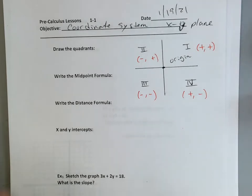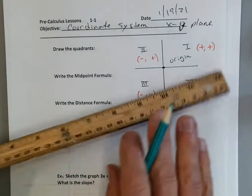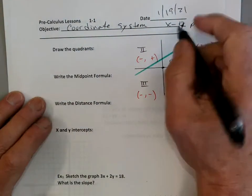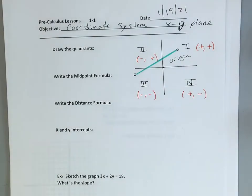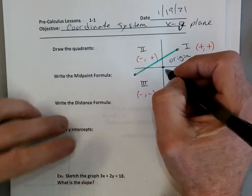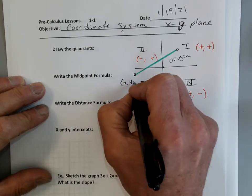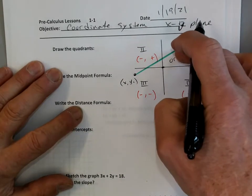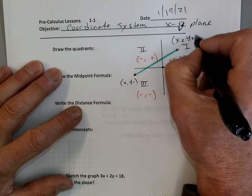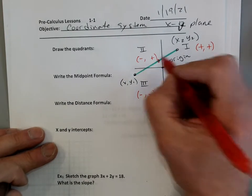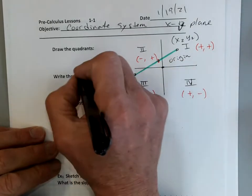Now, the midpoint formula. Let me go ahead and just draw any line segment and put it down in my graph. A formula has to work for every line — not just one line, but for every line. If we call one endpoint X1, Y1, and the other endpoint X2, Y2 — not X squared, but X2 like the second X point — then the midpoint is somewhere in between. The midpoint is just the average.